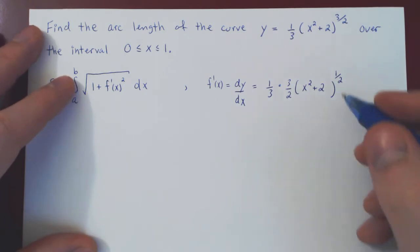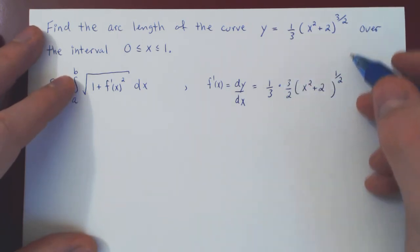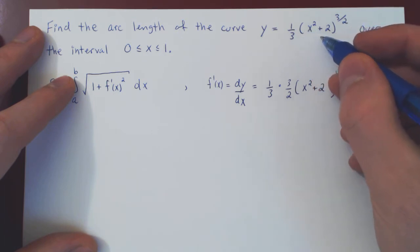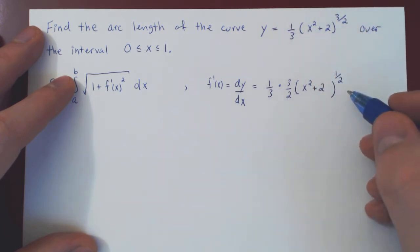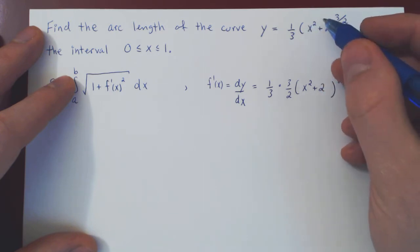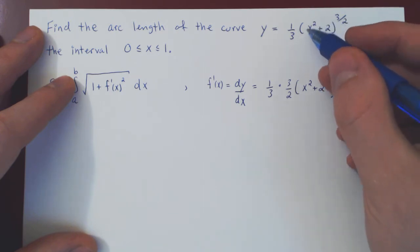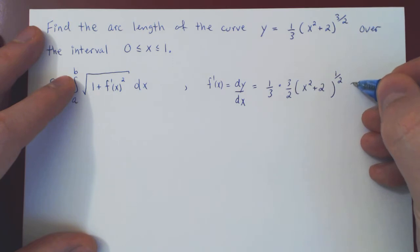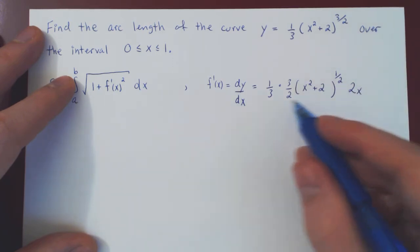But that's not it. This term came from differentiating the power of 3 half. There's still a left over of x squared plus 2. By the chain rule, we have to multiply our expression by the derivative of the left over function. The derivative of x squared plus 2, of course, is 2x. And now this is the derivative.